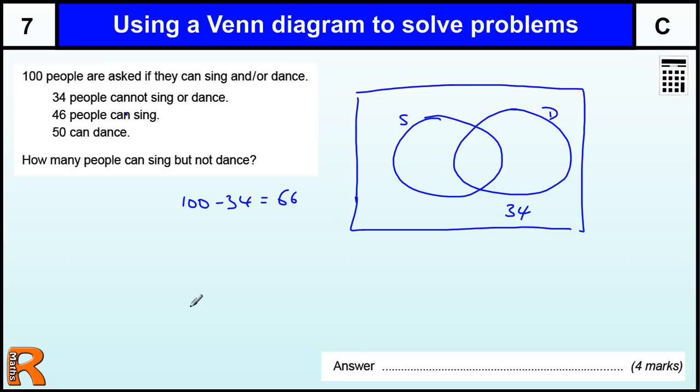We are told that 46 people can sing and 50 people can dance. That makes 96 people. So that's too many people. We've only got 66 people in this diagram.